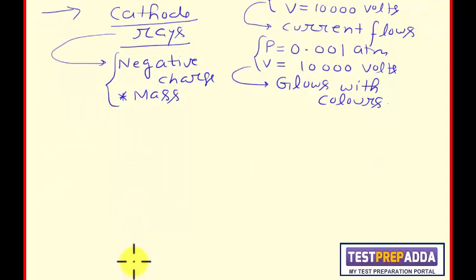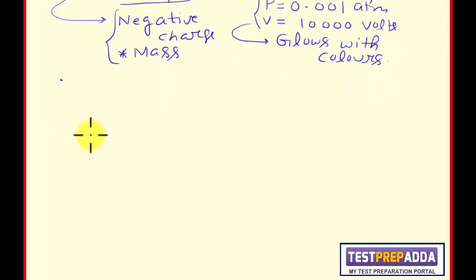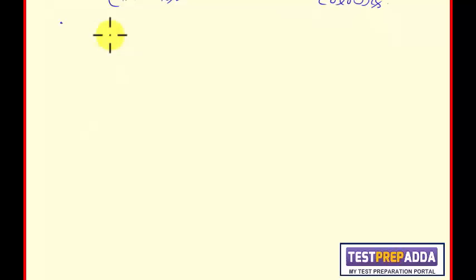Now, to know whether only one type of rays are there or more rays, we conducted the same experiment. But this time we took a perforated cathode. Same glass tube. But this time we took a cathode that was perforated, holes were there. Similar anode.